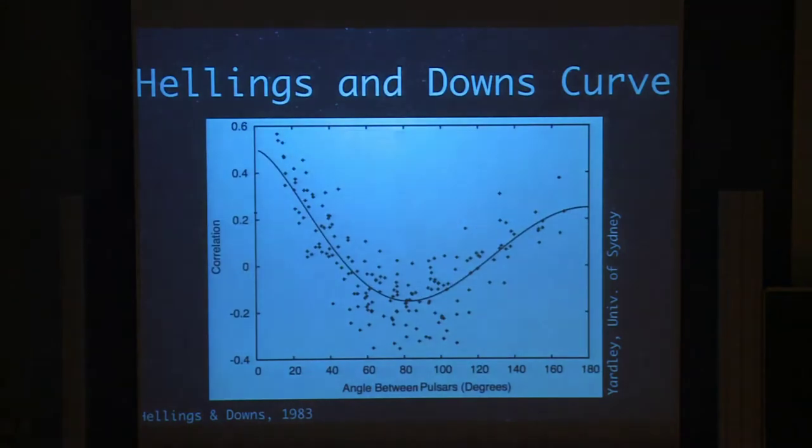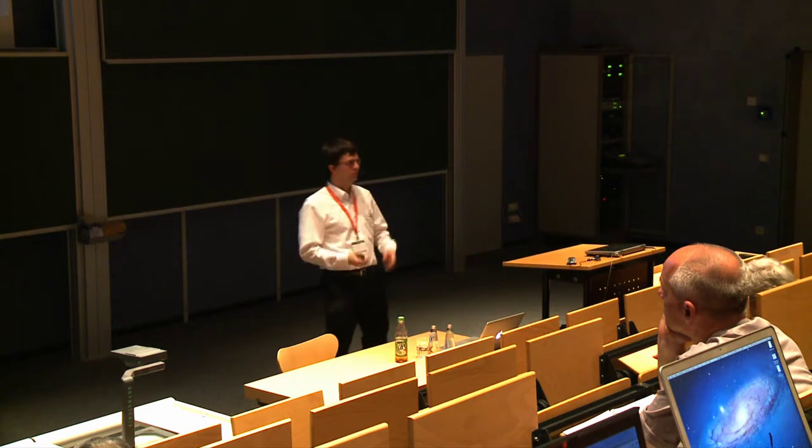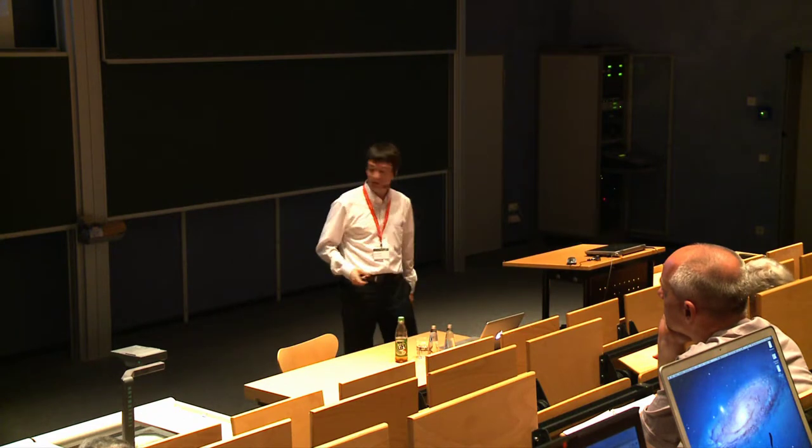Specifically, we tend to use the Hellings and Downs correlation curve as presented in the 80s, where for each pair of pulsars in your array, you have the angle between the pulsars on the sky and you can correlate the timing residuals. And this curve gives you the expected correlation due to the gravitational waves. These dots here are just a simulation to show what an actual detection might look like. So that's how it works. You time your pulsars, get the residuals, cross-correlate and you get this curve.